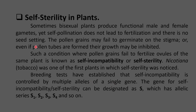We have observed that bisexual plants produce both male and female functional gametes but still no self-pollination occurs. Even if fertilization happens, there is no seed setting. This is because pollen grains fail to germinate on the stigma, or even if formed, their growth is inhibited. This condition where pollen grains fail to fertilize ovules of the same plant is known as self-incompatibility or self-sterility.